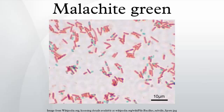Hydrolysis of malachite green gives an alcohol. This alcohol is important because it — not malachite green itself — traverses cell membranes.